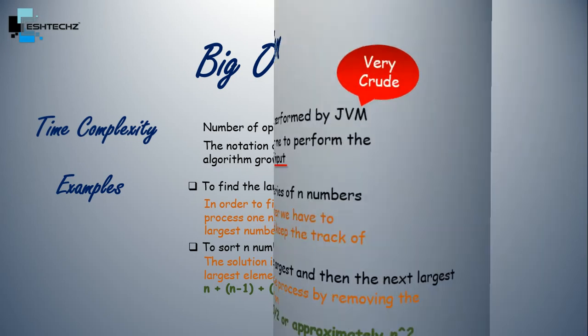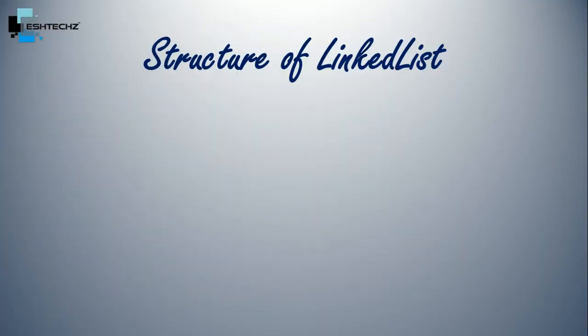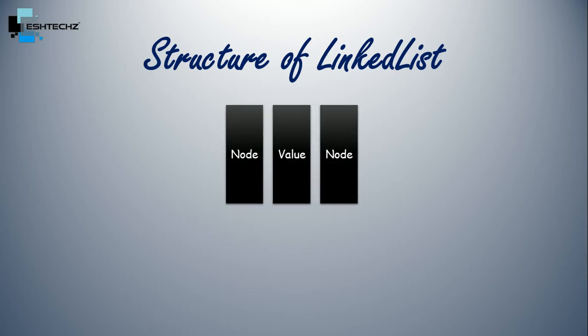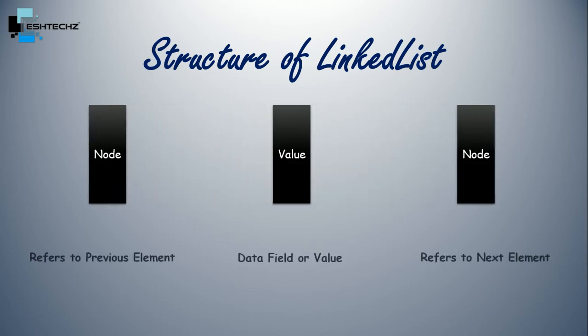So this is equivalent to N times N plus 1 divided by 2, or approximately N to the power of 2. Now moving on to our topic, LinkedList. So let's understand the structure of LinkedList. Now this is one of the blocks of LinkedList. This block consists of three parts. One node refers to the previous element while the other refers to the next element, and the third part contains the value.